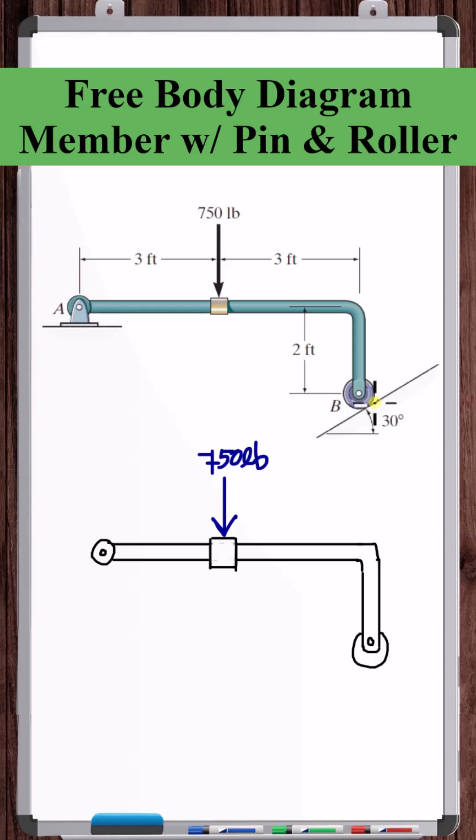At the roller, we assume that the contact between the roller and the surface is smooth. So the reaction force here acts normal to this surface at the point of contact. Based on the orientation of this surface, this angle is 30 degrees.